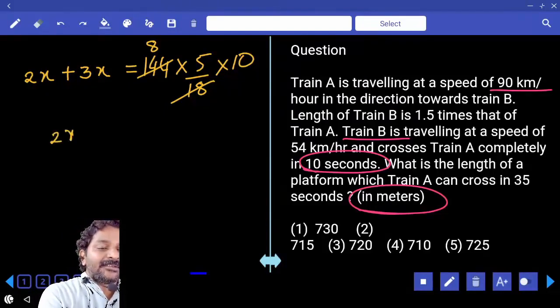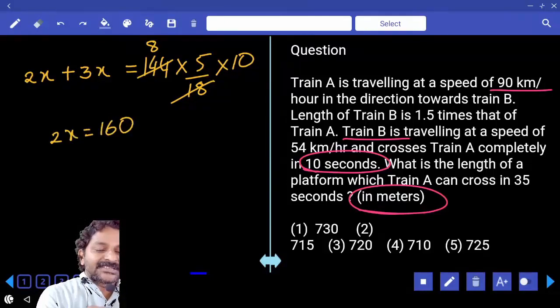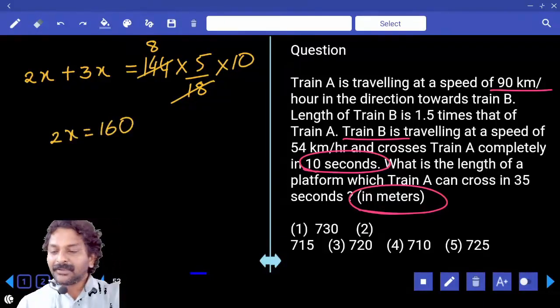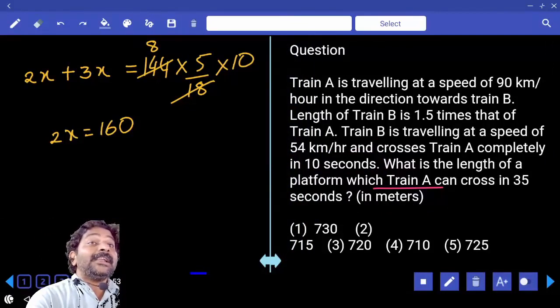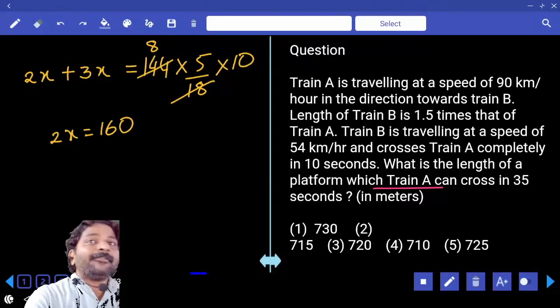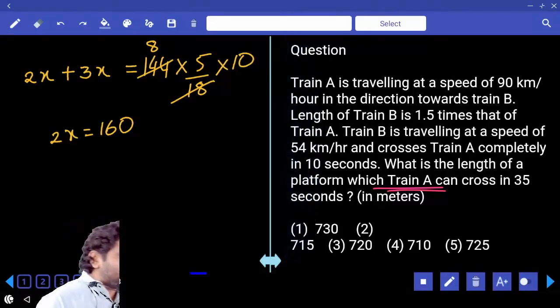Clear. Now your question is related to train A only, but not to calculate train A length. We were asked to calculate length of the platform. Train A of length 160 meters crosses the platform in 35 seconds with the speed 90 kilometer per hour.